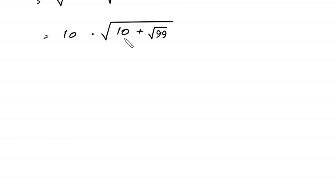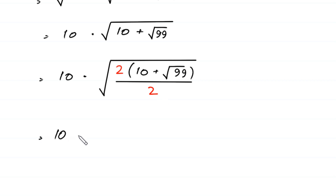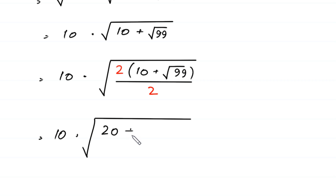Now we multiply and divide this expression by 2. So we have 10 times square root of (2 times 10 plus square root of 99) divided by 2, which gives 10 times square root of (20 plus 2 times square root of 99) divided by 2.